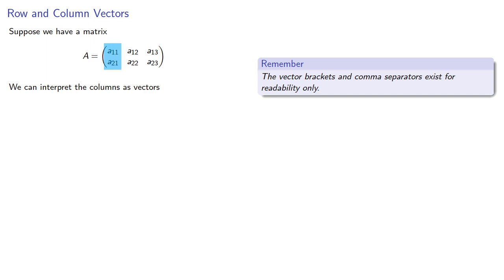Our first column with entries A11, A21, we can interpret that as the vector A11, A21. Similarly, the second column becomes the vector A12, A22, and the third column becomes the vector A13, A23.